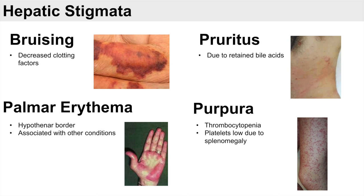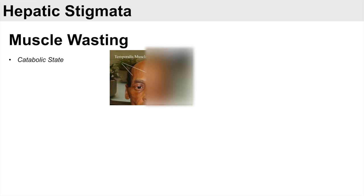Another sign of liver disease is muscle wasting. Chronic liver disease is a catabolic state that leads to muscle wasting in various areas of the body. You often see it in the hands, and sometimes in the temporalis muscles on the forehead as well.